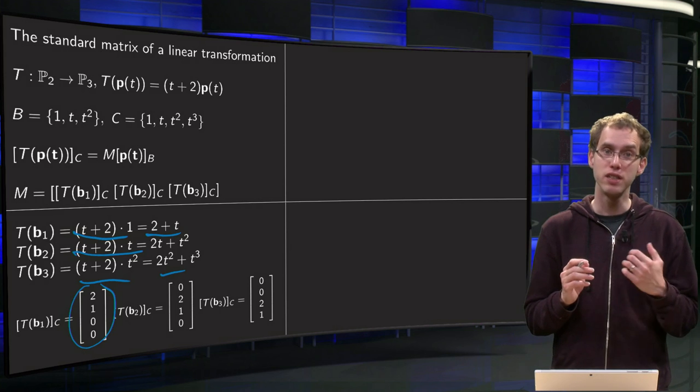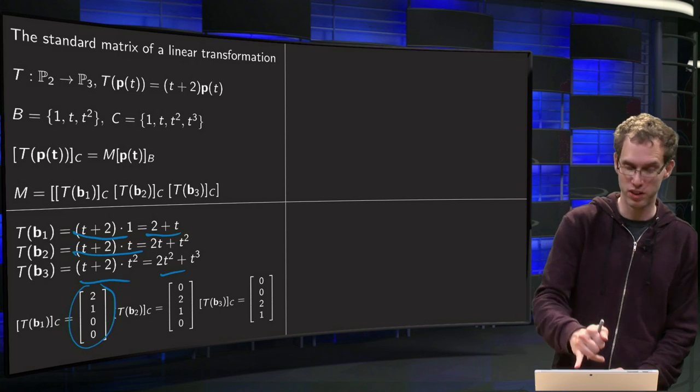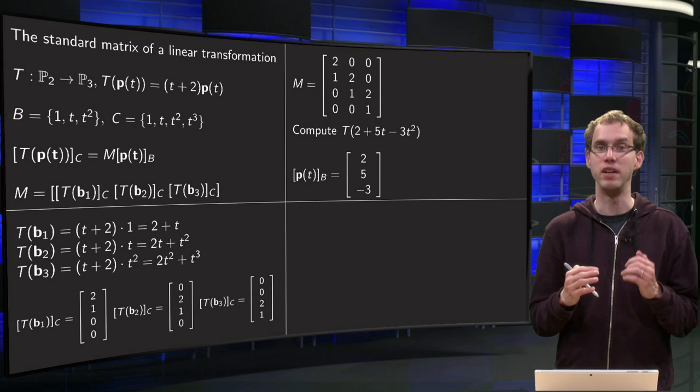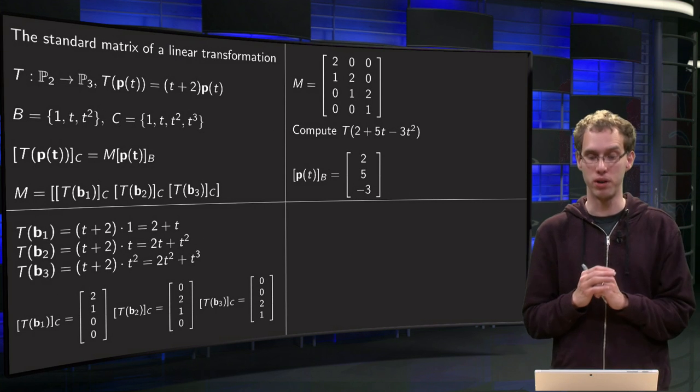And then we have the [T(b₁)]_C, [T(b₂)]_C and [T(b₃)]_C. And we find our M matrix which just has that as our 3 columns.